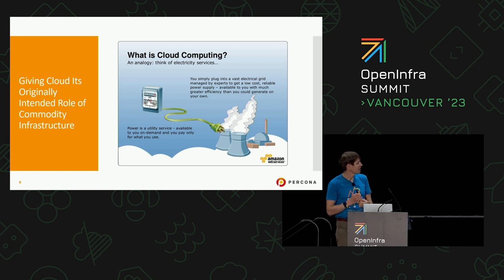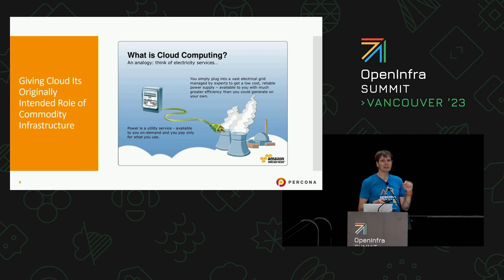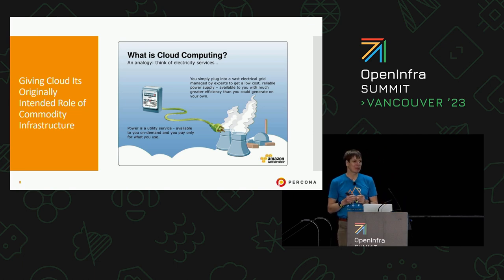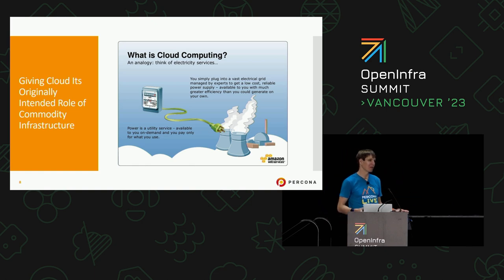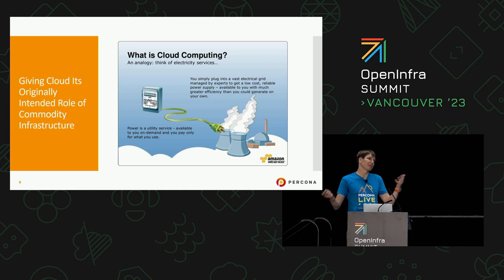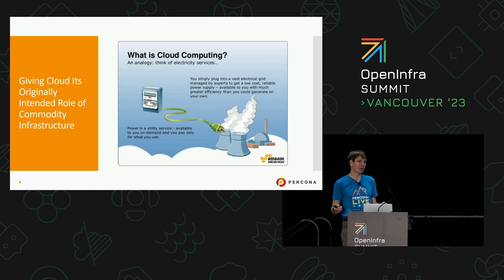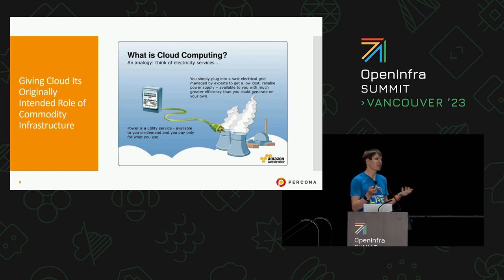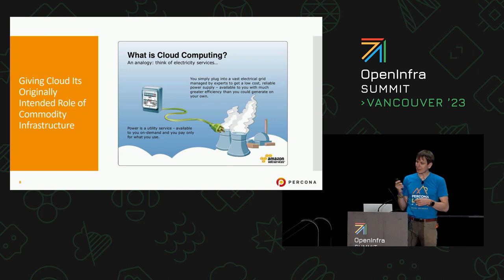Wherever your infrastructure choice is, that really compares to electricity. Electricity is indeed a commodity — you can get it from any vendor, buy your own generator, and your TV and fridge still work. Compare that to the Amazon experience, or GCP, Azure — where they're saying, if you want your fridge, TV, and microwave, you can only buy electricity from us. That doesn't make much sense.